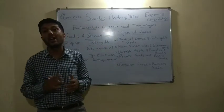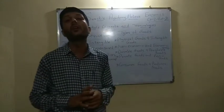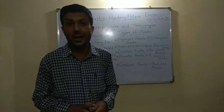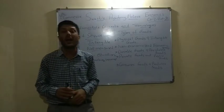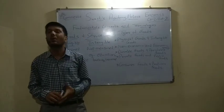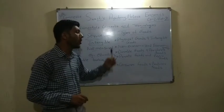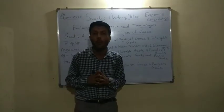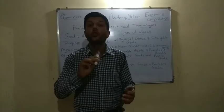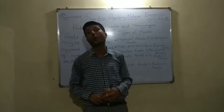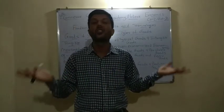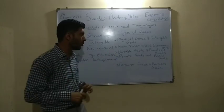Public goods yani bahut saare log usko upyog kar sakte hain — usse public goods bola jata hai. Isme joint consumption hota hai — log milke milvart ke use karte hain. Jaise cooperative society hai, usme public garden hai. Public garden mein sab society ke log jo jo maintenance vartte hain, sab us garden ka upyog karte hain. Aur private goods mein, sab se important baat kya hai: maine ek mobile khareed liya — woh mobile market mein, doosra us type ka mobile milte hain, par woh hi particular mobile jo maine liya, uski maaliki kisi aur ko nahi mil sakti. Aur public goods mein kya hai: sab milke consume kar sakte hain, acchi tarah se upyog kar sakte hain, aur joint consumption hota hai.